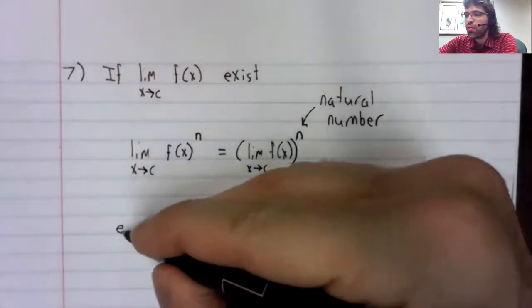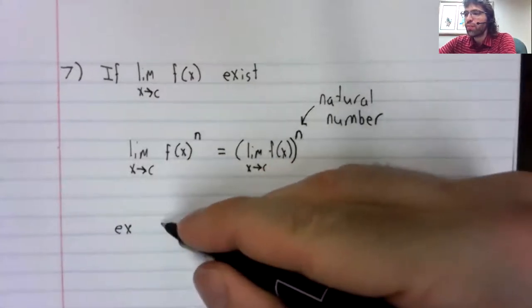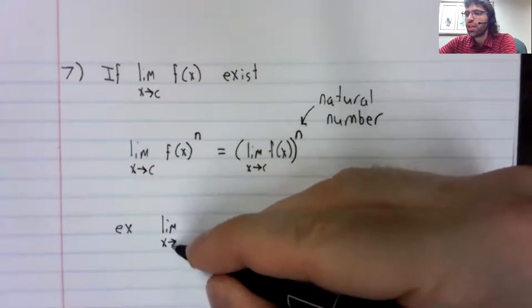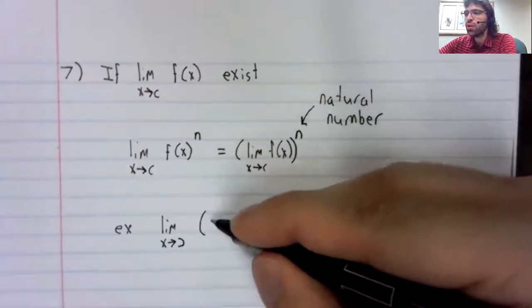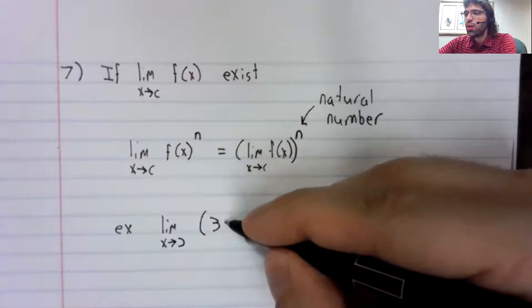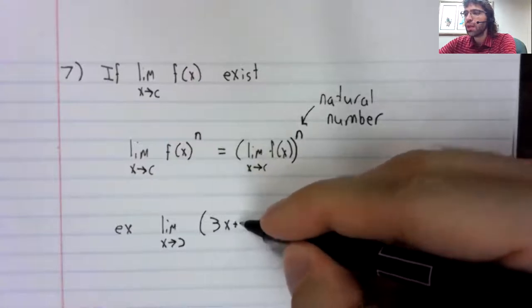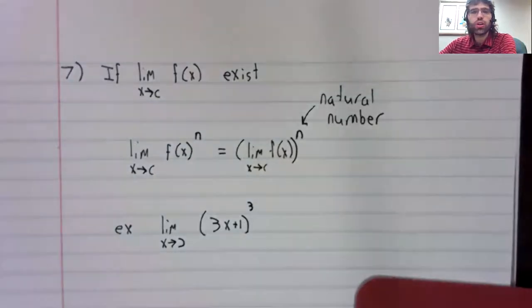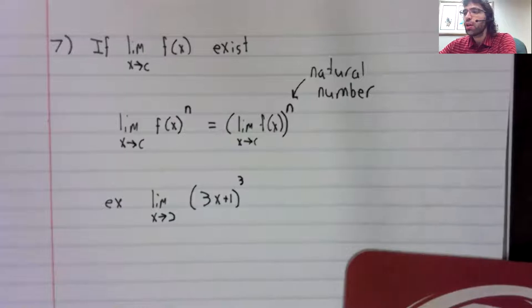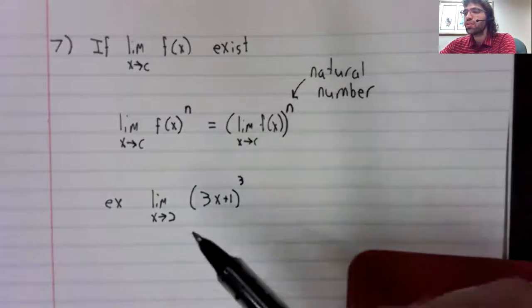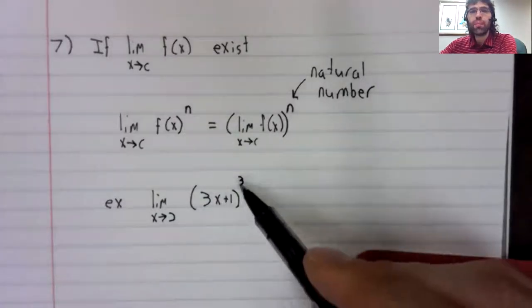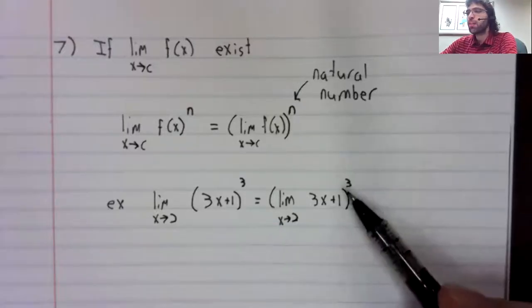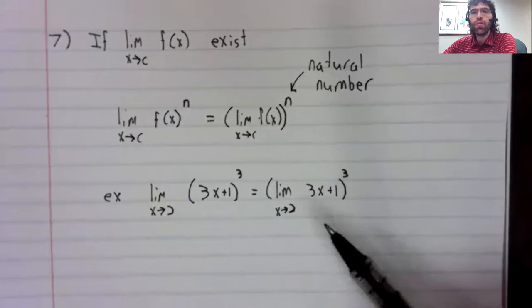So for example, if we have the limit as x approaches 2 of (3x - 1) to the third power, what this rule says is that we can take the limit of a power and rewrite it as a power of the limit.